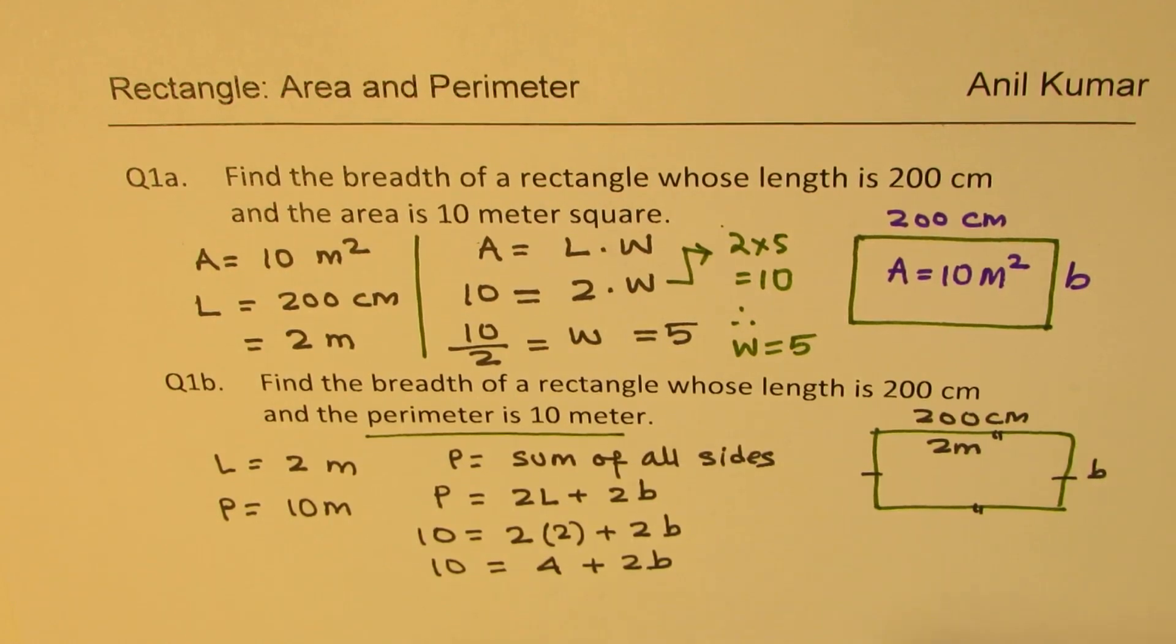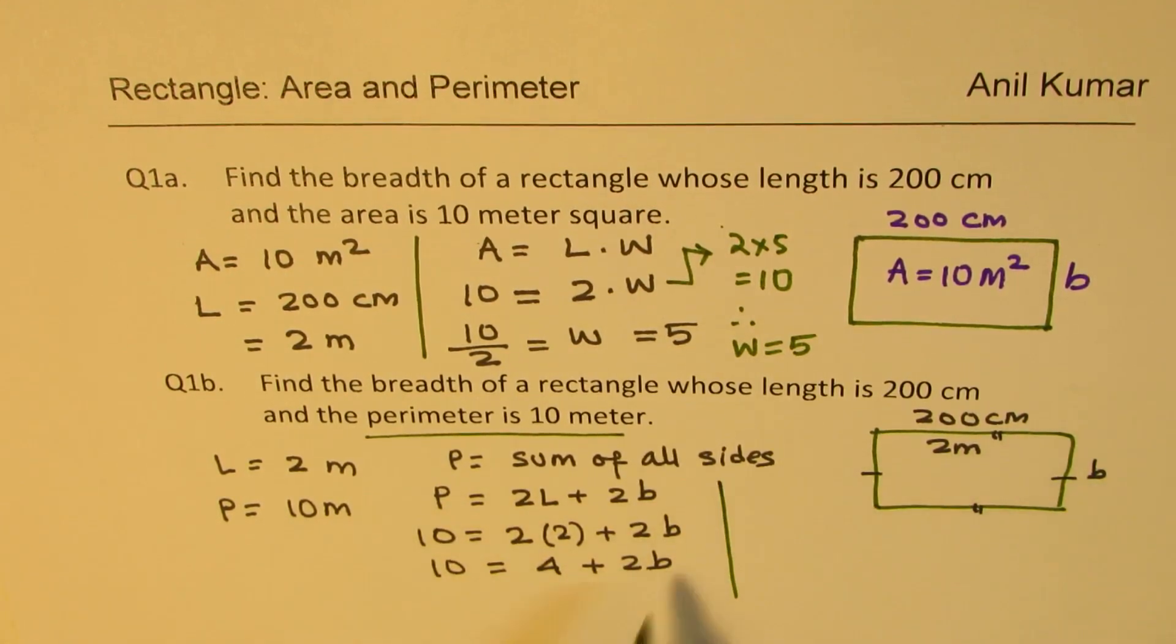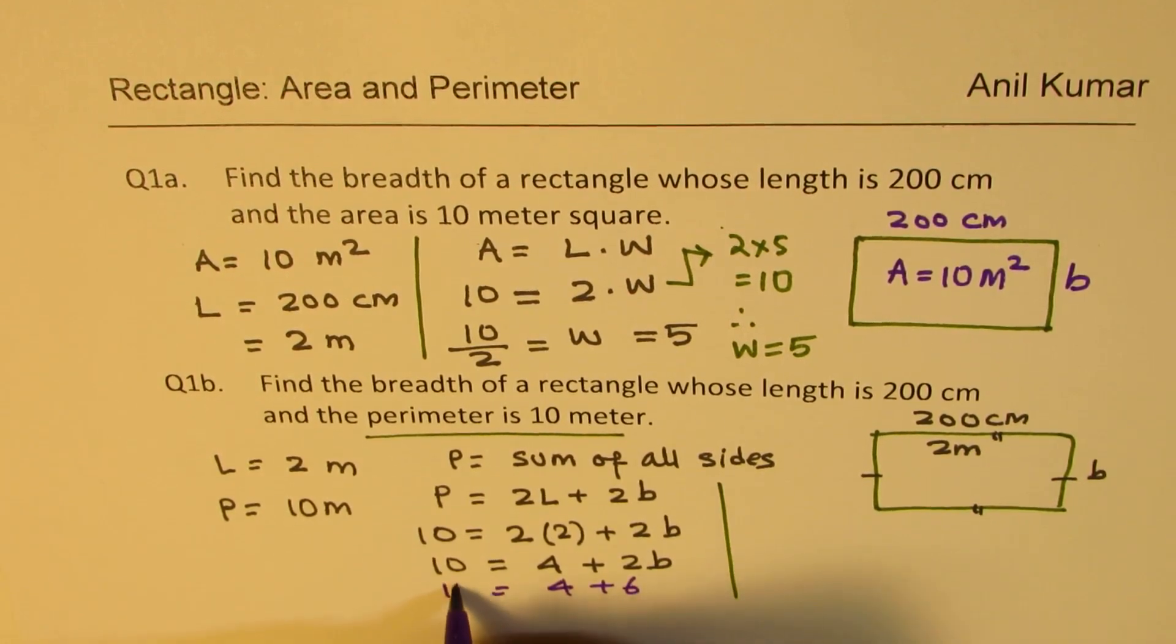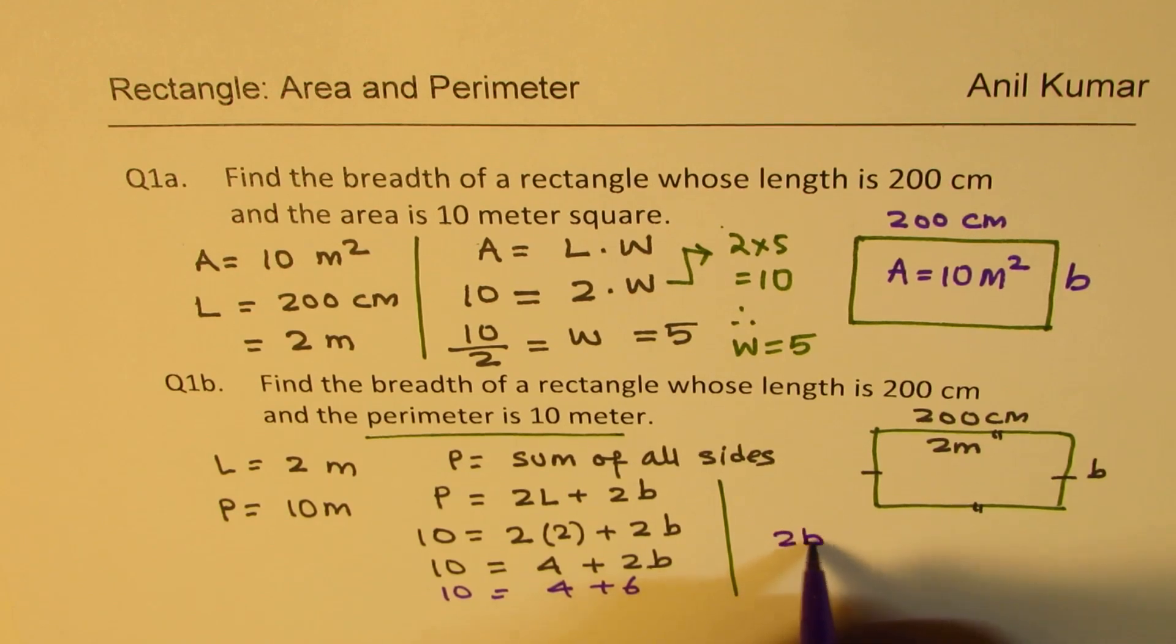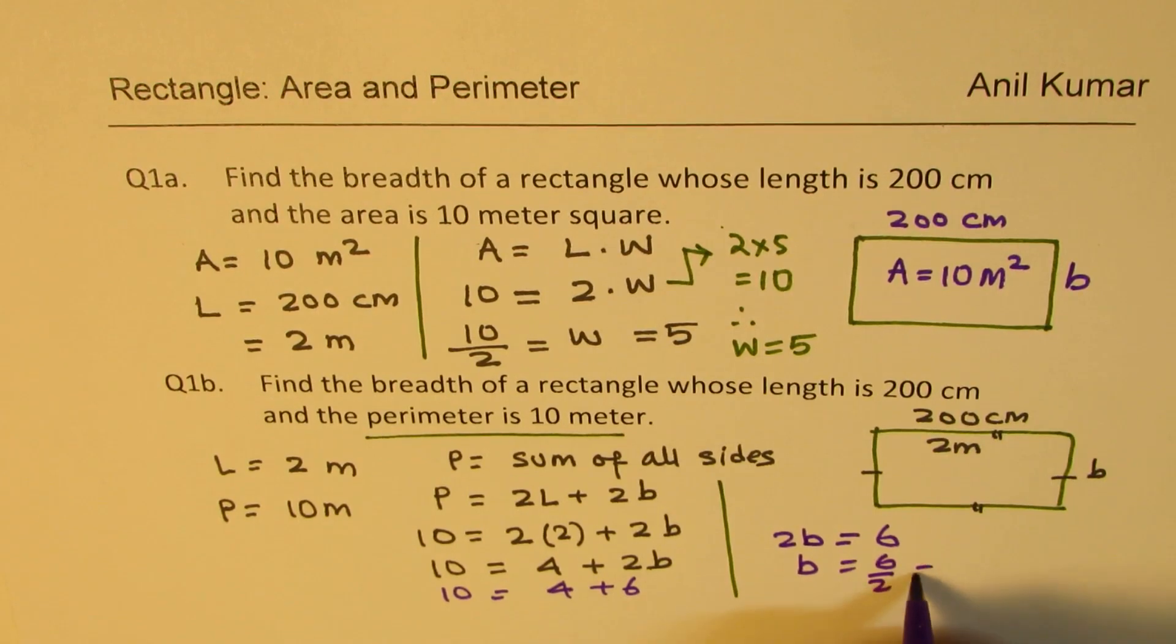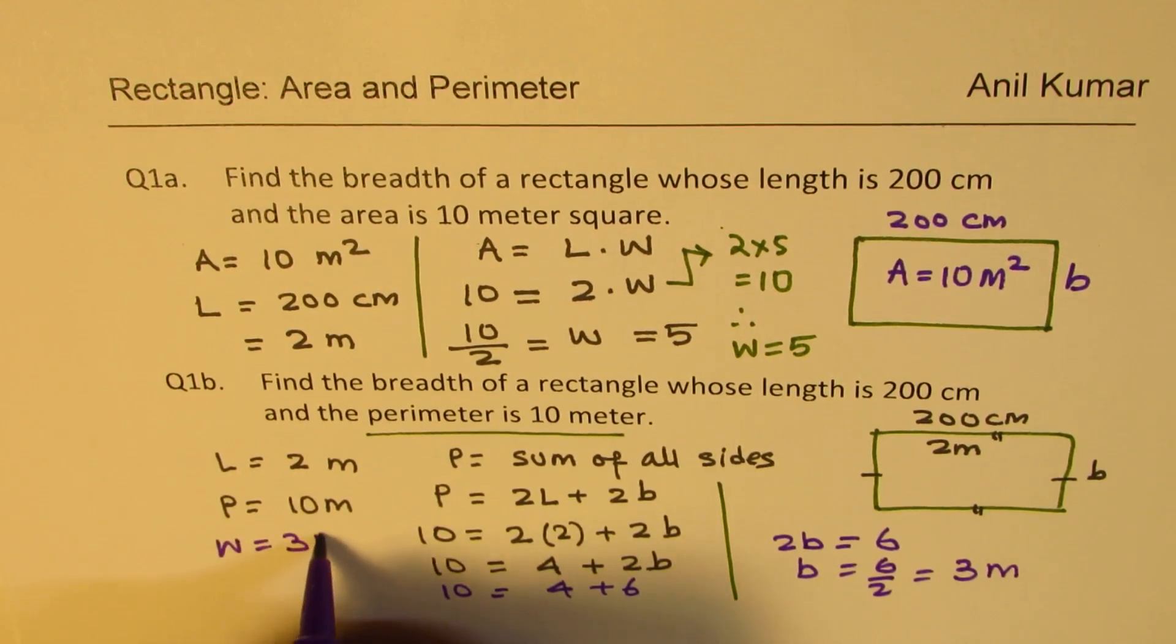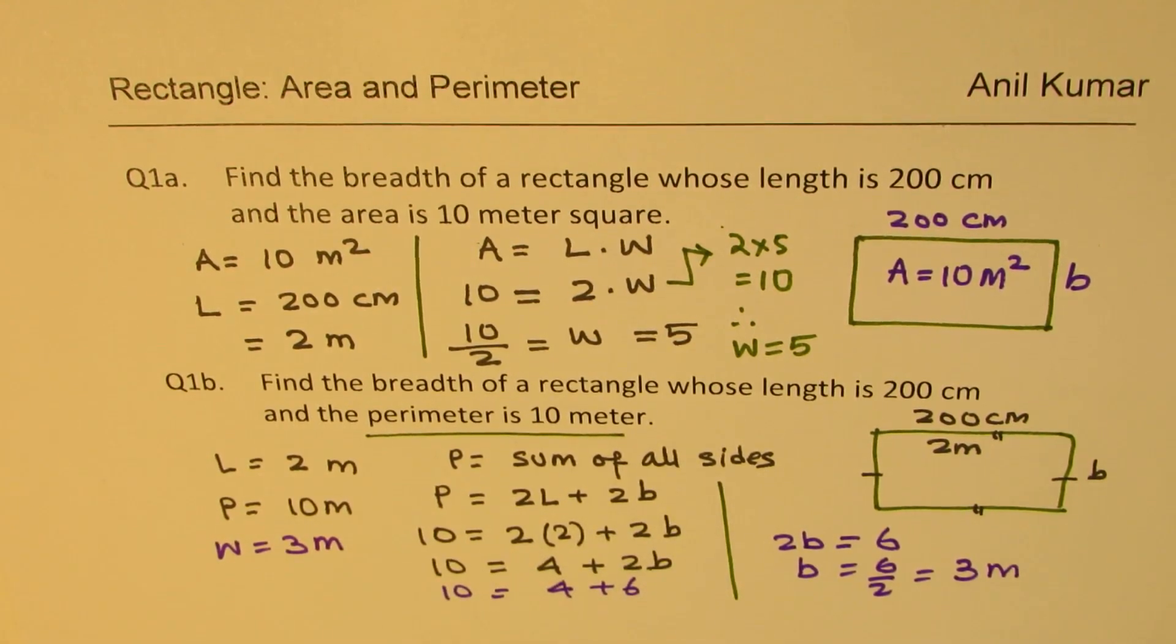From here we can easily solve what breadth should be. 10 equals 4 plus what? 4 plus 6. So from here you can say 4 plus 6 is 10. Therefore, 2 times breadth should be 6, or breadth should be 6 over 2, which is 3 meters. In our case, we get width of 3 meters in the second case.